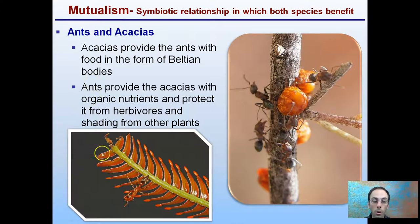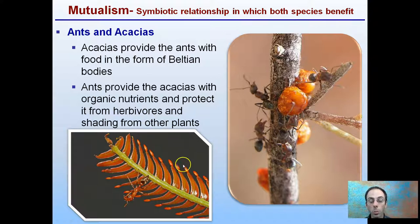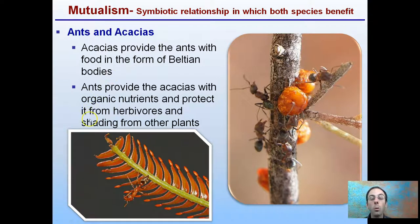Another example: ants providing food bodies — these large structures here. Ants are providing organic nutrients and protecting plant regions from herbivores and shading from other plants, eliminating competition. As a result, the plant is able to do better, so the plant benefits. And the ants, in this case, are also getting a benefit. So when both species are benefiting through the relationship, that is called mutualism.